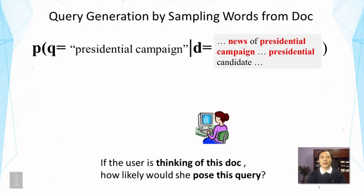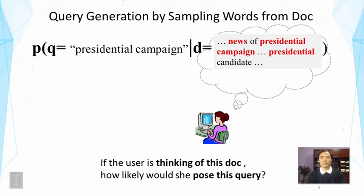In the query likelihood retrieval model, our idea is to model how likely a user who likes a document would pose a particular query. If a user likes a particular document about the presidential campaign news, we assume the user would use this document as a basis to pose a query. The query is generated by sampling words from the document.